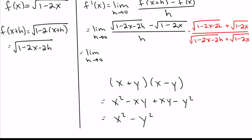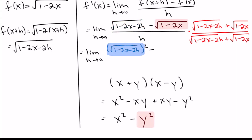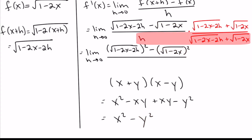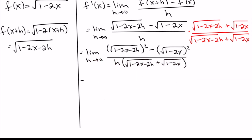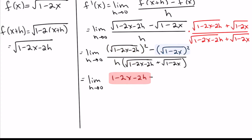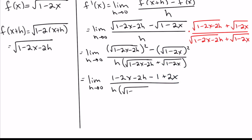If we apply that, the first term squared minus the second term squared gives us the result on top, and our bottom stays exactly the same. A good suggestion: don't multiply the bottom out until you know you need to. On the top, if we let the square and the square root cancel each other out, we end up with 1 minus 2x minus 2h, and distributing the minus sign gives minus 1 plus 2x. The bottom stays exactly what it was before.